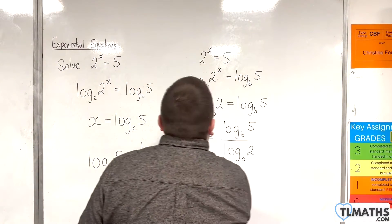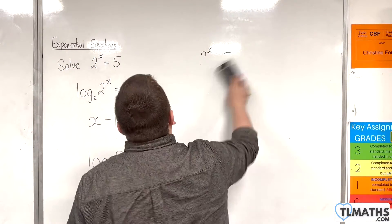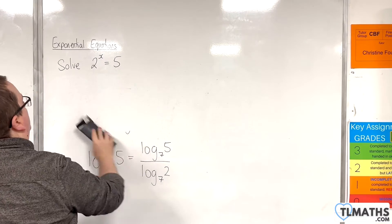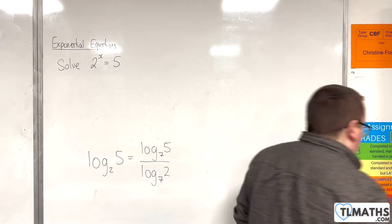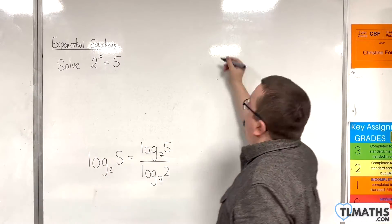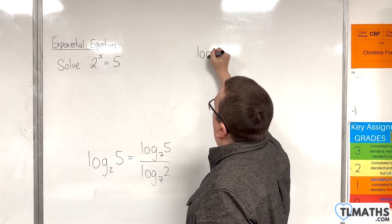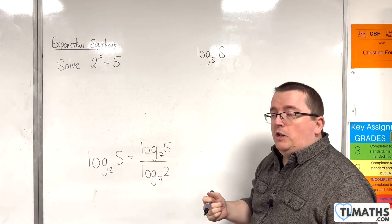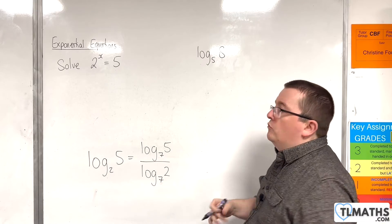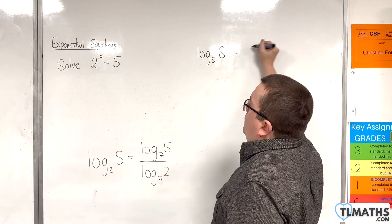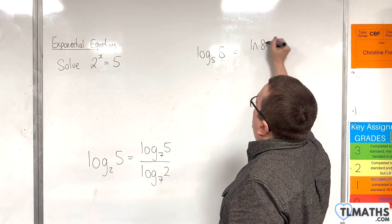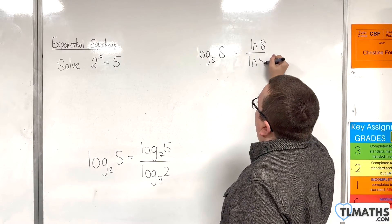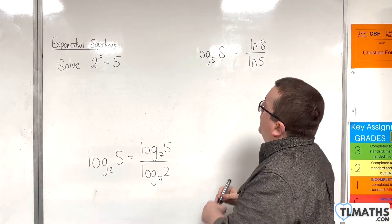Okay, let's take a look at another example. Let's say I had log base 5 of 8, and I wanted to write that in terms of a natural logarithm. So, that would be the natural log of 8 over the natural log of 5.